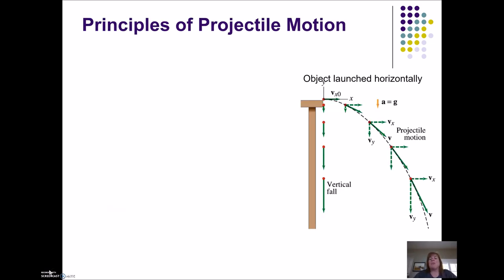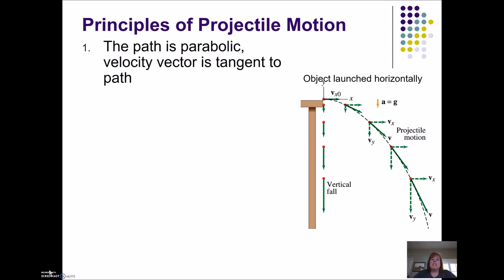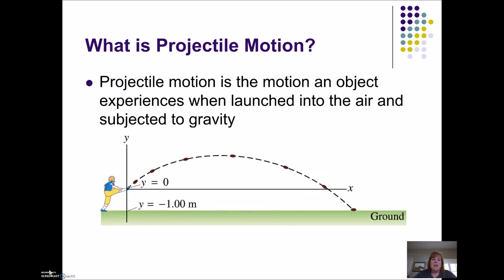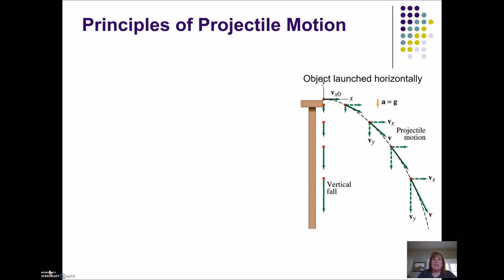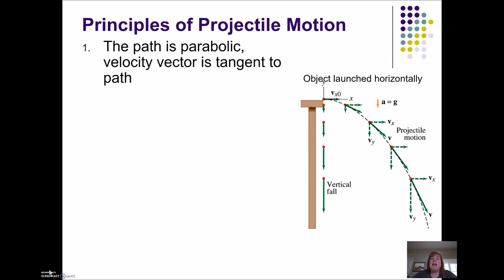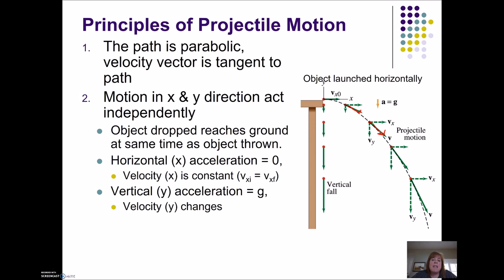Let's talk about the principles of projectile motion. The first thing is that the path is parabolic. Whether I launch an object horizontally or like our football kicker, the path is parabolic and the velocity vector — the net vector — is going to be tangent to the path. You'll see these little velocity vectors, and notice that they're tangent to the path. That's the net velocity. What's happening in the x and y directions are actually completely different, and we're going to see that in class.